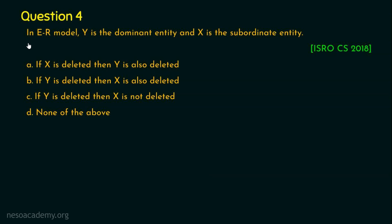Question number four: in an ER model, Y is the dominant entity and X is the subordinate entity. Which one of the following options is correct? This question was asked in ISRO Computer Science 2018. Option A: if X is deleted then Y is also deleted. Option B: if Y is deleted then X is also deleted. Option C: if Y is deleted then X is not deleted. Option D: none of the above. Your 20 seconds starts now.